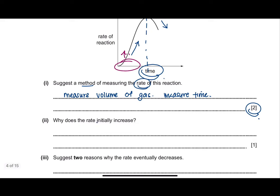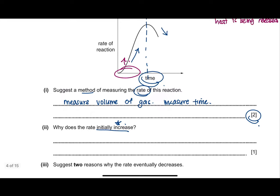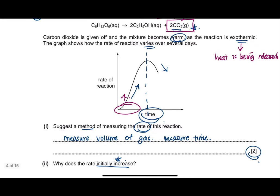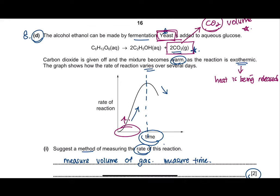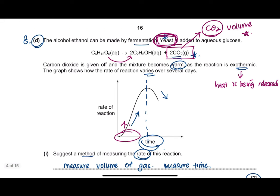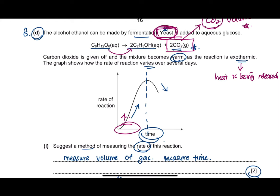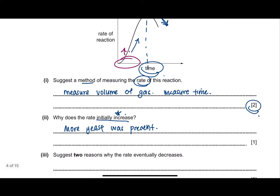Question B asks why the rate initially increases. The pattern for this chapter is consistent — they frequently ask why the rate is high at the beginning and why it decreases later. At the beginning, there were a lot of yeast present to convert glucose into alcohol. As the reaction proceeds, the yeast is used up and cannot convert glucose into alcohol at the same rate, which is why the reaction starts to slow down.